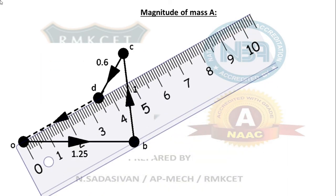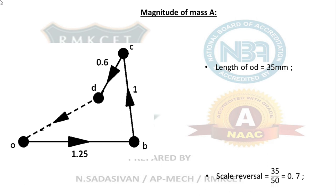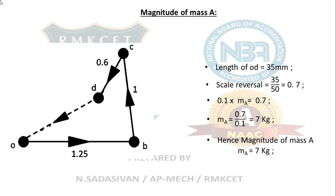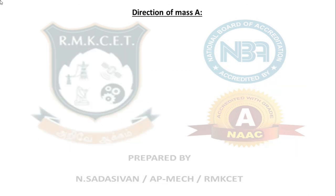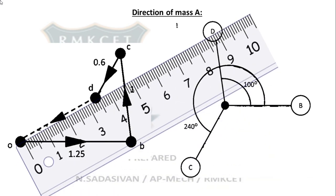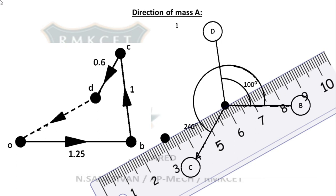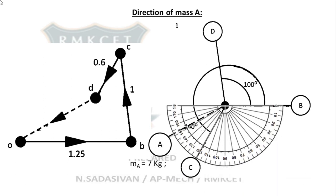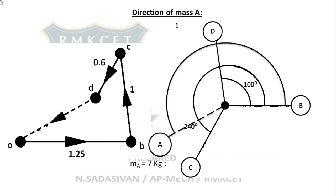Measuring the closing side: it comes to approximately 35 mm. Reversing the scale: 35 ÷ 50 = 0.7. Therefore, 0.1·MA = 0.7, so mass A = 7 kg. Now updating the angular position diagram: transfer the direction of mass A from the force polygon into the angular position diagram — same direction, same sense (complete balance). Measuring with the protractor: it comes to approximately 180° + 28° = 208°.